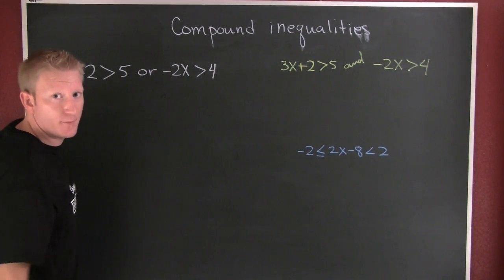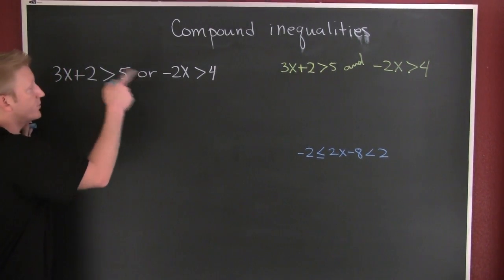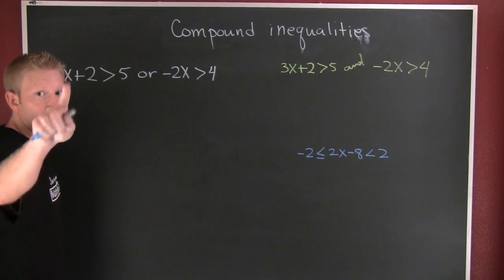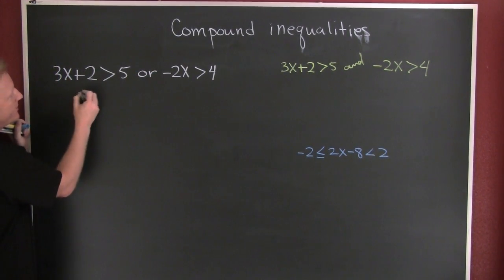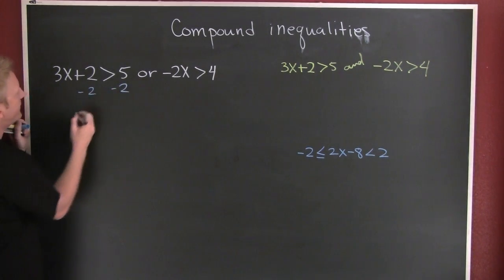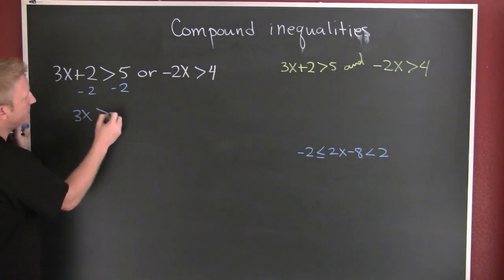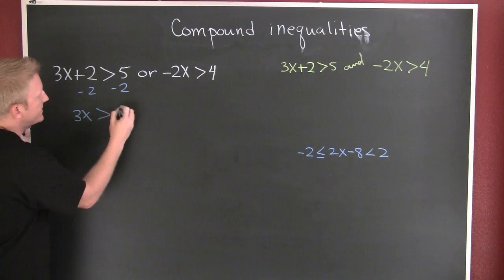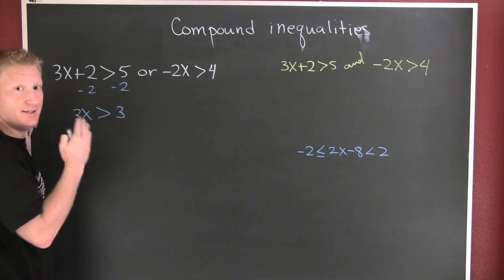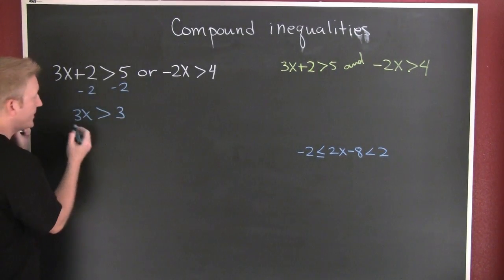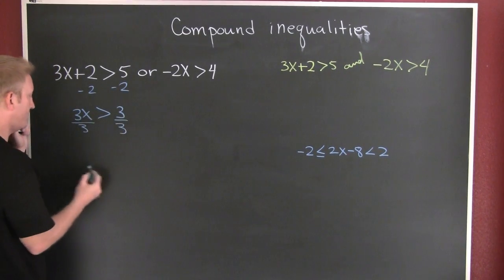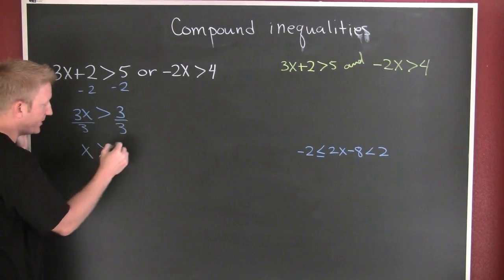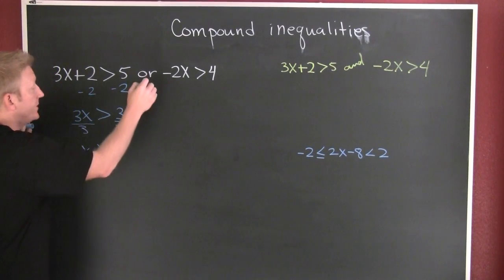I'm gonna solve them on down. These things work just like equalities except for one case. Wait for it. We'll get there. All right, so over here I'm gonna subtract off a 2. So I have 3x is gonna be bigger than, oh wait, 3. That worked out comfortably. Then I divide both sides by 3. And then x is gonna be bigger than 1. Fun.